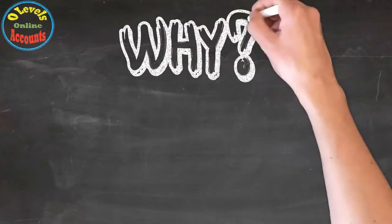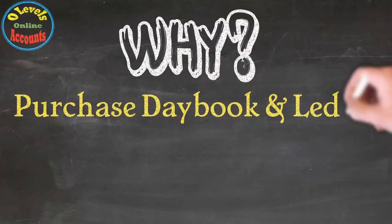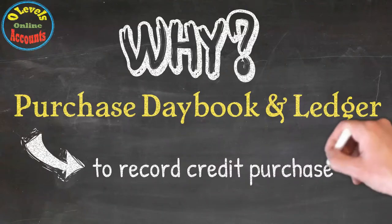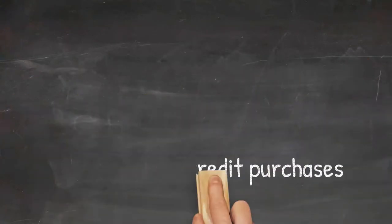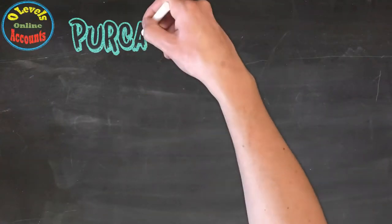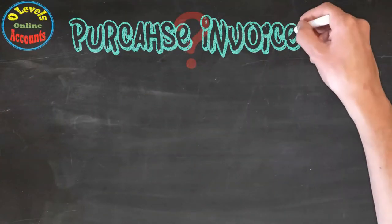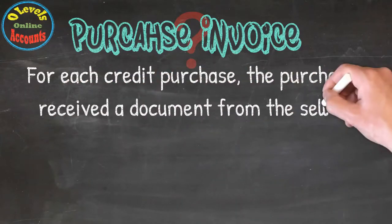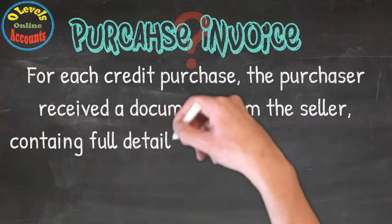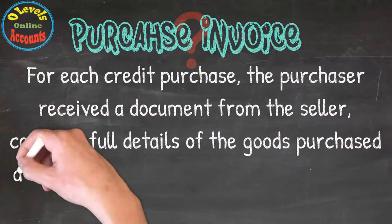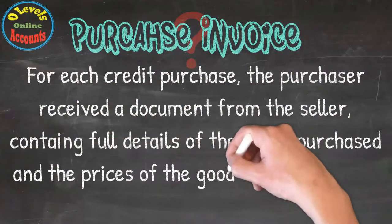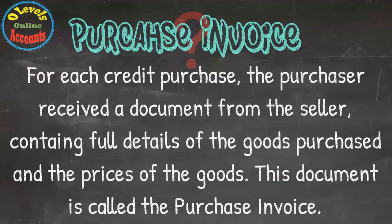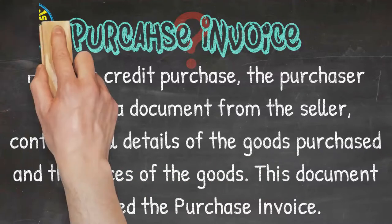The Purchase Daybook is used to record credit purchases. For each credit purchase, the purchaser receives a document from the seller containing full details of the goods purchased and the prices of the goods. This document is called a Purchase Invoice.